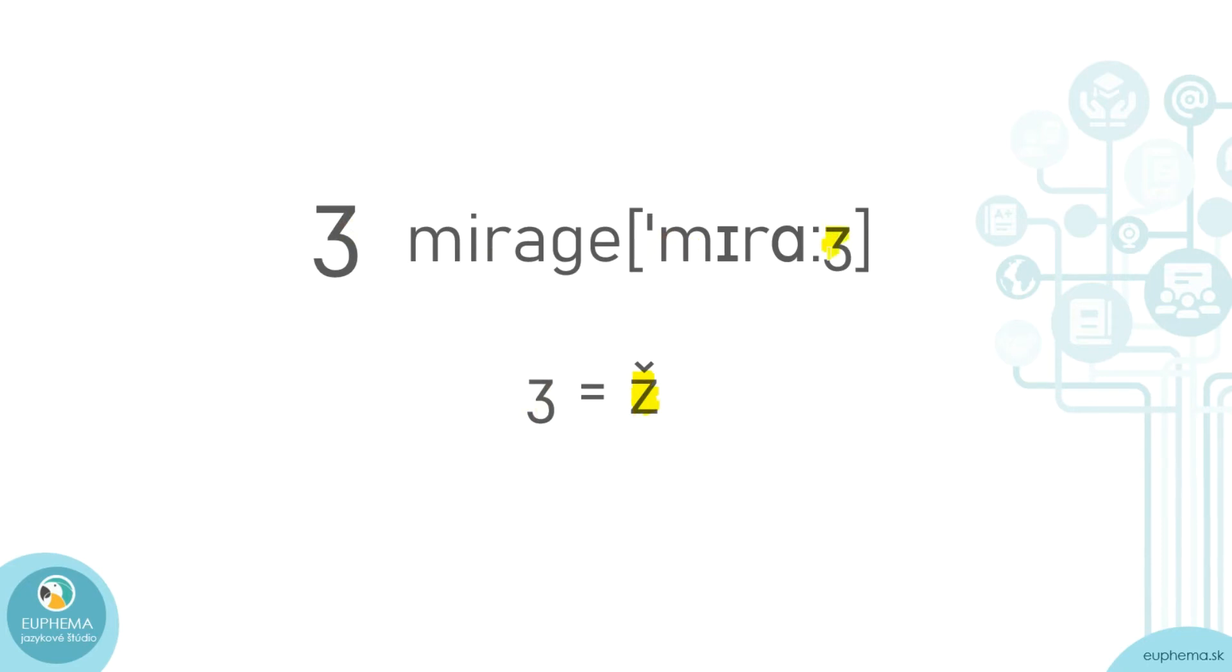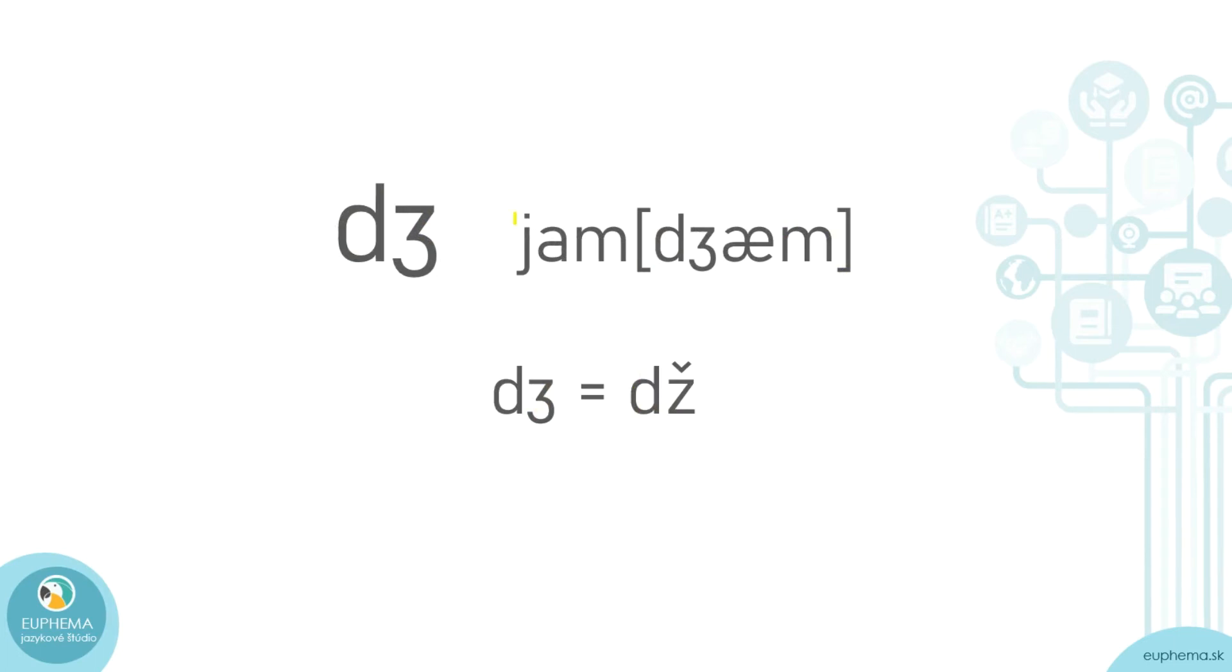Next one is a combination of D and Z. We have it in the Slavic language as well. Its voice is 'dʒ', and for example you can see it in a word like 'jam'.